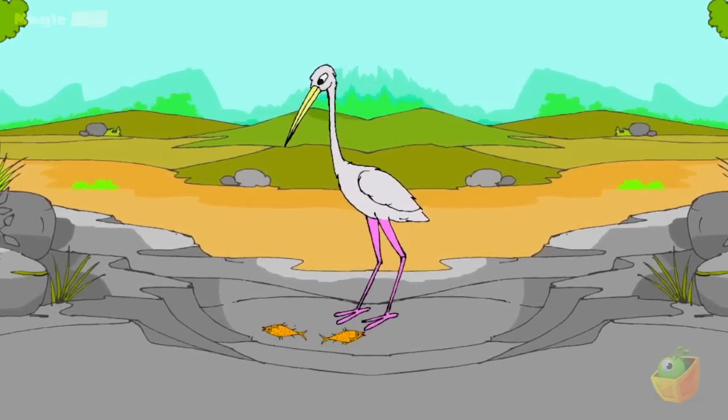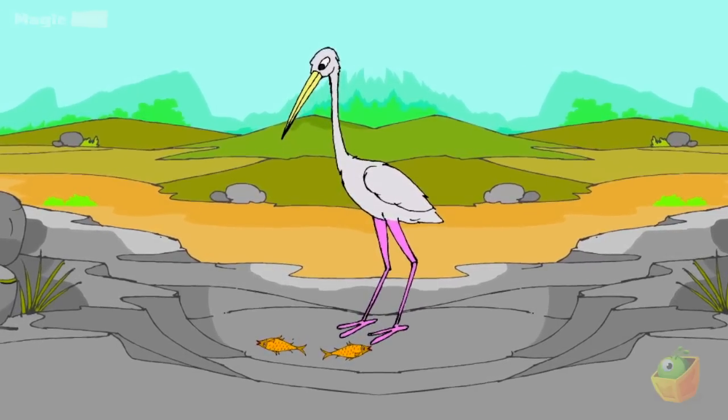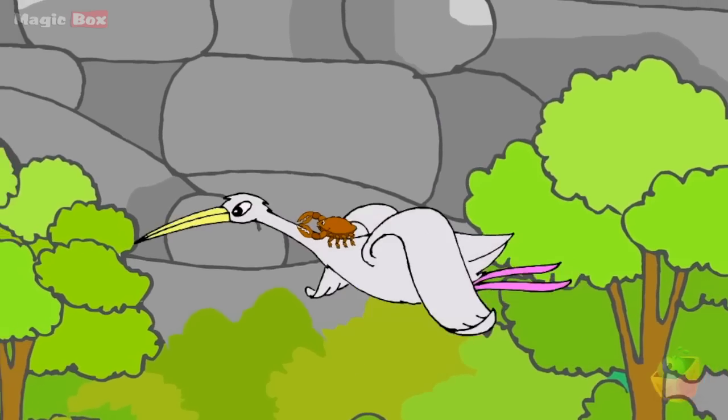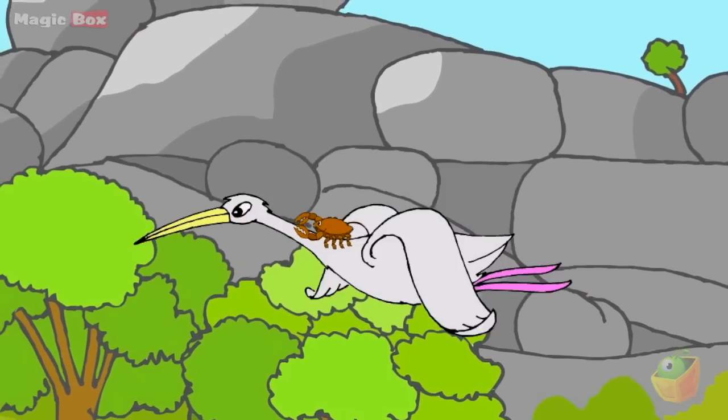It got fed up of eating fishes every day. Why can't I cheat the crab and eat it? Thought the crane. It called the crab. The crab climbed onto the back of the crane. The crane flew.